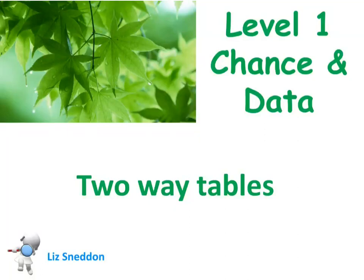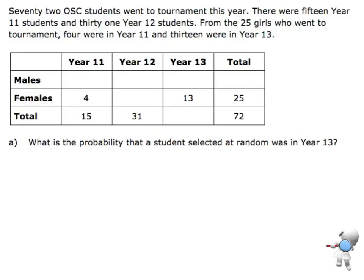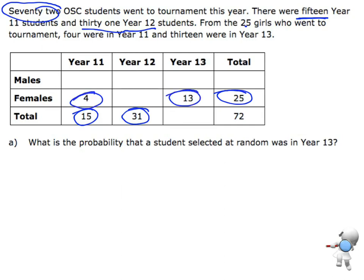Let's have a look at two-way tables. We've got some information here about students going to tournament. We're told that 72 students went to tournament. There were 15 Year 11 students, 31 Year 12 students, and from the 25 girls in total, four of them were in Year 11 and 13 were in Year 13.